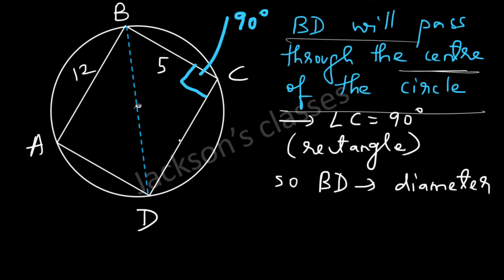So this is 5, this is 12. This is a rectangle, so opposite sides are equal. This is 5, this is 12. This is 90 degrees.